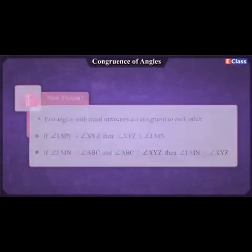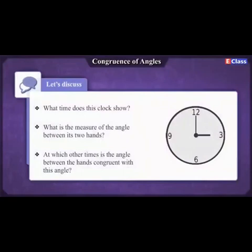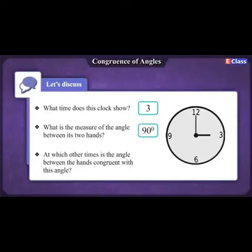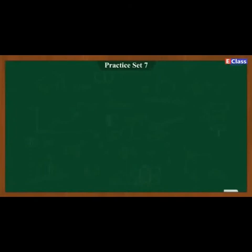Let's have some information about a clock. What time does the clock show? 3 o'clock. What is the measure of the angle between its two hands? 90 degrees. At which other times is the angle between the hands congruent with this angle? Answer: 9 o'clock. Let's begin with Practice Set 7.